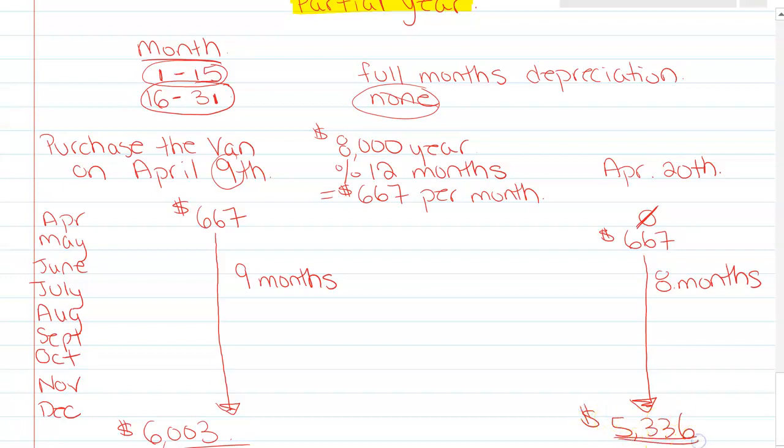That's how much depreciation expense we would record on the van if we bought it on April 20th. Now, what a lot of companies do is just use a partial year rule — it doesn't matter whether they buy the van at the beginning or end of the year or month; they'll just take 50% of the amortization in the first year they bought it. But if we're going to do it this way, in student life, this is how you make the decision of how much depreciation to record.